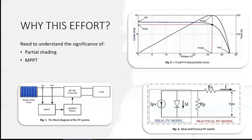We have a PV array connected to the MPPT, then to the MOSFET driver, and then to the DC-to-DC converter and the load. We have sensors which measure IPV and VPV and feed the readings to the MPPT. On the right, we have the ideal PV model and the practical PV model as well.